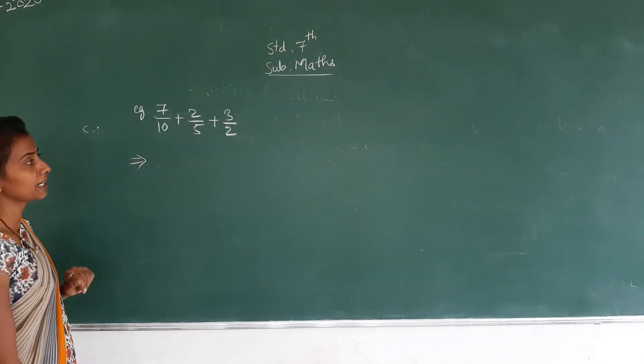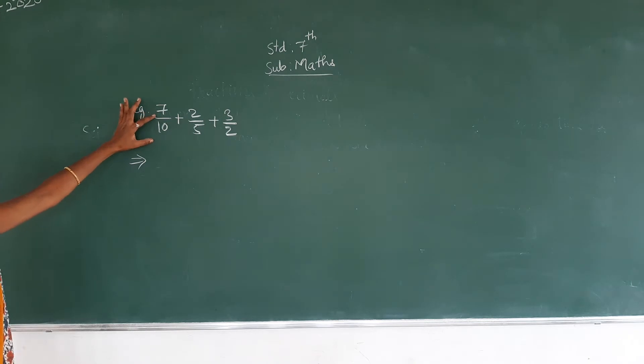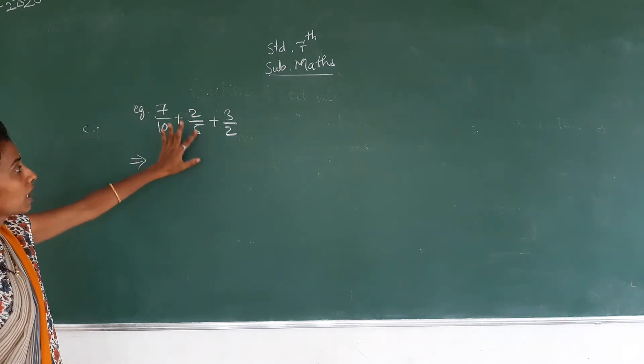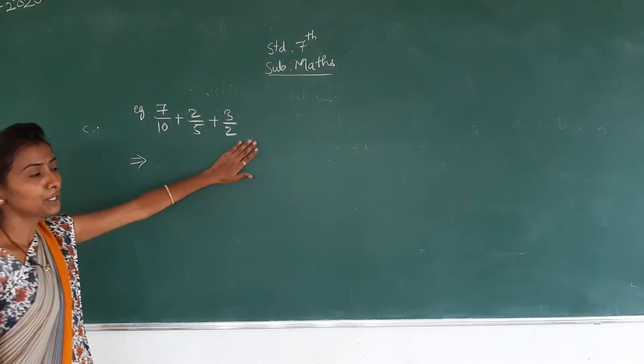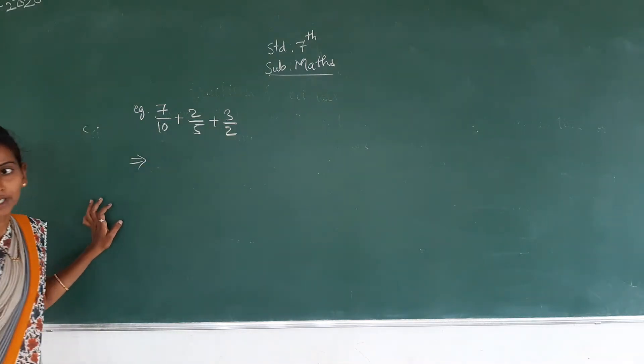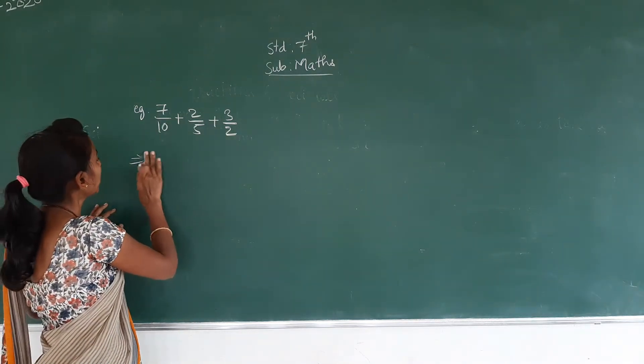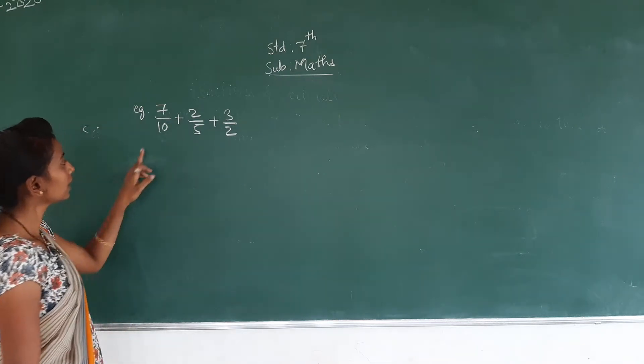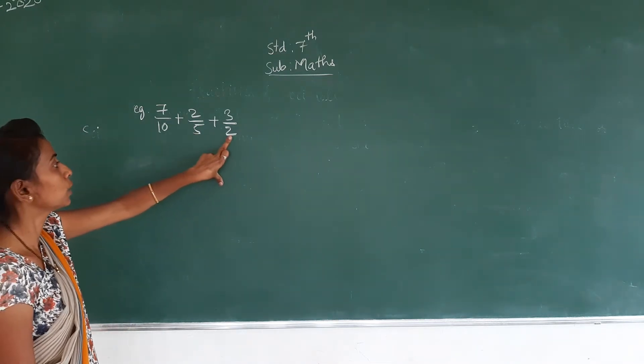Now we will go to the second example. That is 7/10 + 2/5 + 3/2. Here both the denominators are different, for that we have to make them the same. Here 10 is there, here 5 is there, here 2 is there.